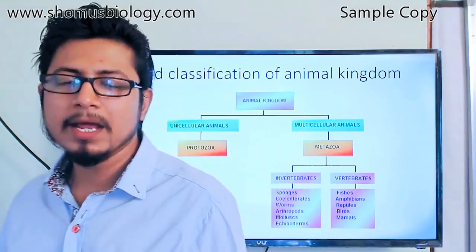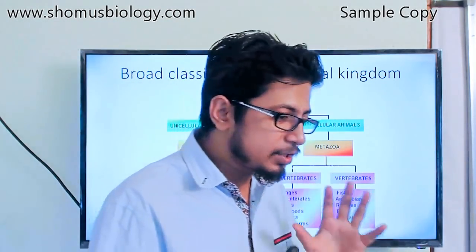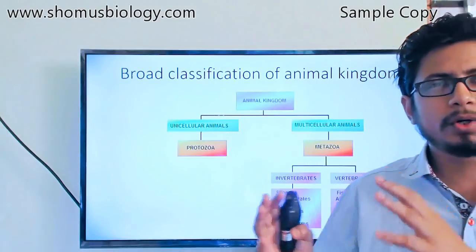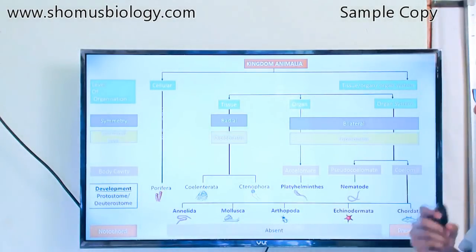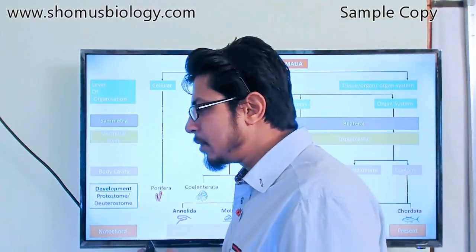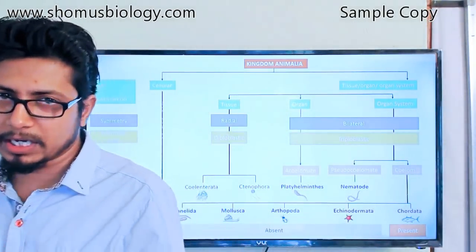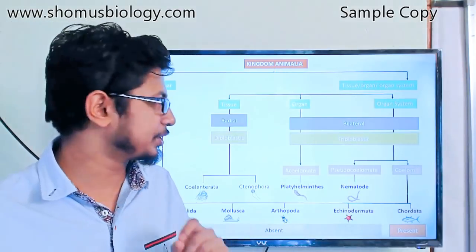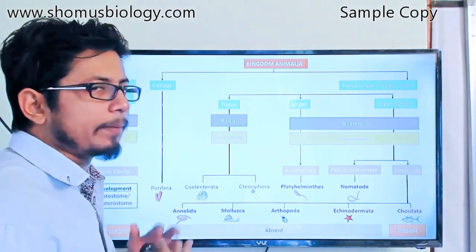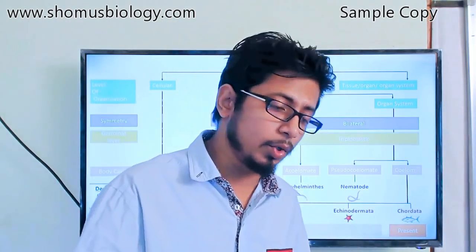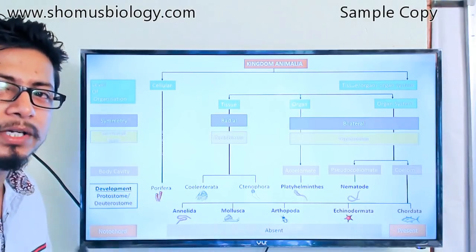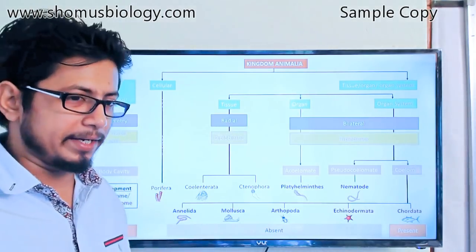This broad classification is not the level at which CSI NET generally asks questions, so we need to understand animal classification at a deeper level. The next slide is the most important slide in this lecture — it not only shows how Kingdom Animalia is classified, but also helps you understand how to remember this classification in a sequential and logical manner.